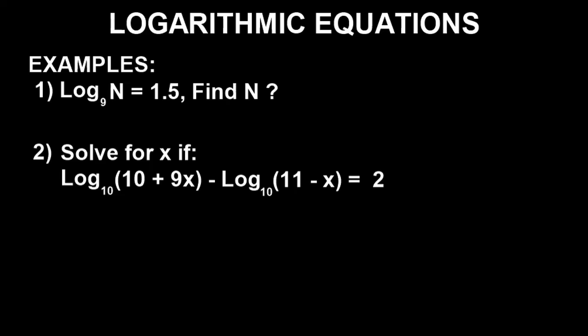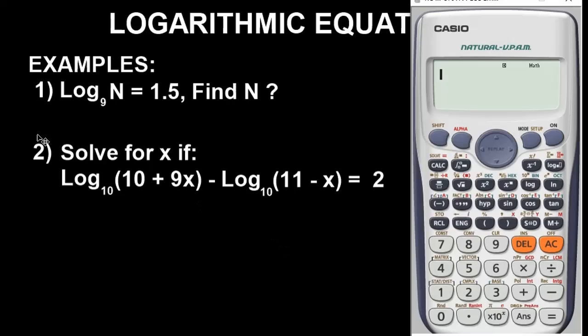Let's start by solving the examples I have here. Example one says Log₉(N) = 1.5, find N. To solve this kind of problem in the Casio calculator, as usual, before you begin, I recommend you clear your calculator. Press shift button 9, press 3, press equals and press equals again.